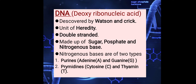Nitrogenous bases are of two types: purines and pyrimidines. Purines are further divided into adenine and guanine. Pyrimidines are further divided into cytosine and thymine. Purines always bond with pyrimidines — adenine always bonds with thymine with a double bond, and guanine always bonds with cytosine with a triple bond.